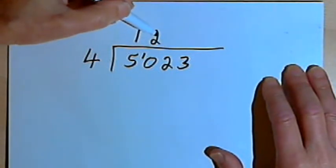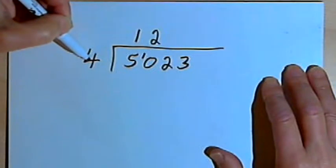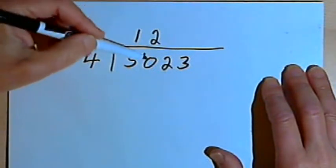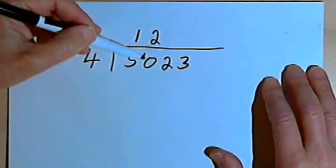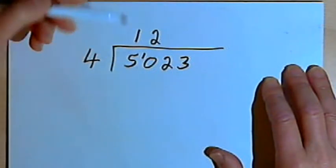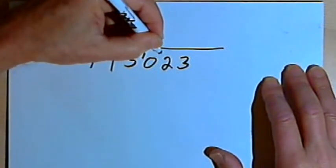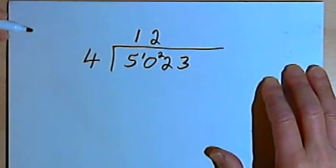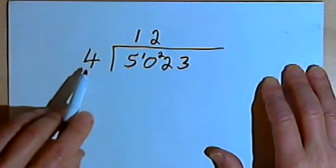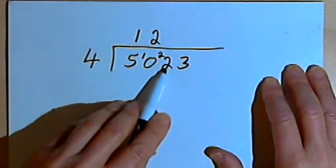And then I want to multiply 2 times 4 is 8. And I'm going to keep that 8 in my head and subtract it from 10. 10 minus 8 is 2. So I'll take that 2, put it in front of the next digit, which is also a 2, and I want to divide 4 into 22.